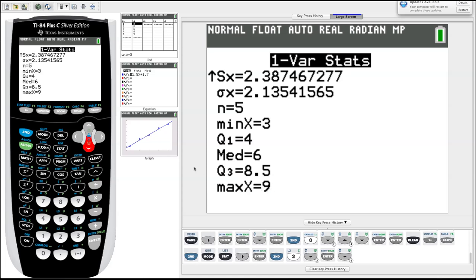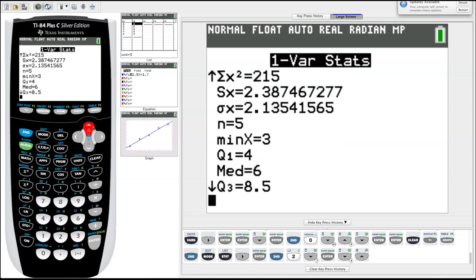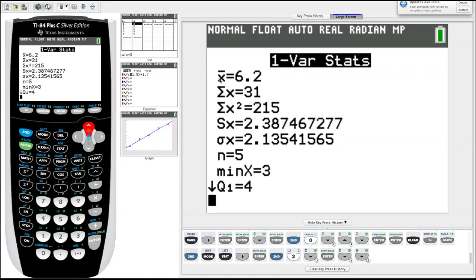So this gives, so one var stats gives us, if we scroll back up, gives us a whole bunch of information, important information, our average, our standard deviation for sample and population, number of data points, quartiles, etc.